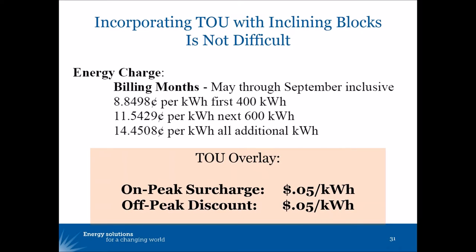One of the simplest ways to combine these ideas is to put an overlay of an on-peak surcharge and an off-peak discount to the inclining block rates. So when the customer is using energy on-peak, 5 cents is added to their charge. When using energy off-peak, 5 cents is subtracted from their energy charge.